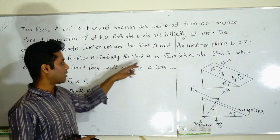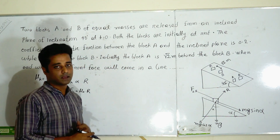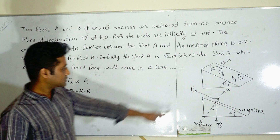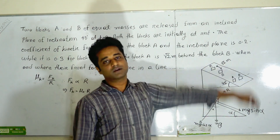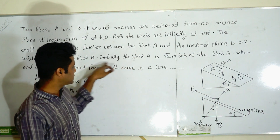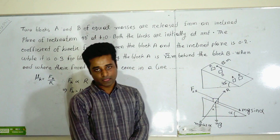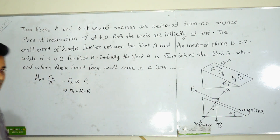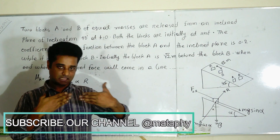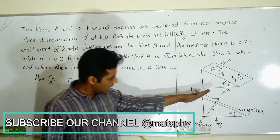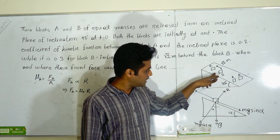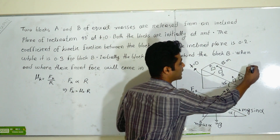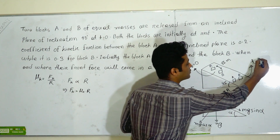So what do we do? Initially block A is √2 meters behind block B — at t equal to 0, initially. We had a start. A is √2 meters behind B. When and where will their front faces come in line? The other front face will come in a line — they will meet. At t equal to capital T, we can use this. Something is equal to time, T is equal to capital T.